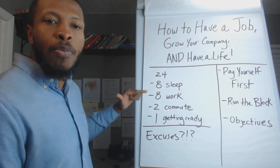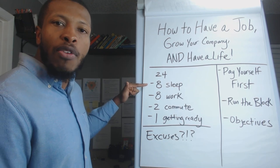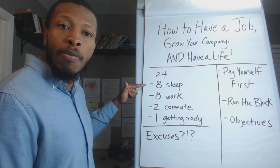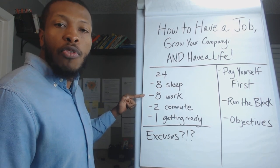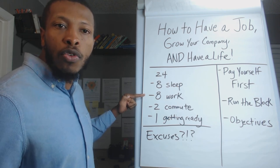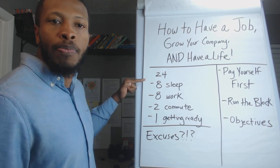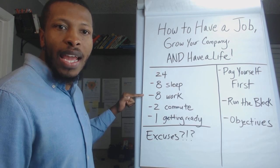So if we do some basic math, you take away eight from 24, that's 16. You work a typical nine-to-five shift, that's another eight hours. So you've gone from 24 to 16 to eight.